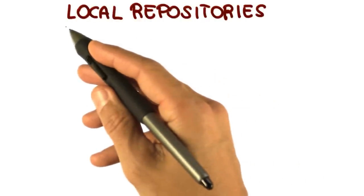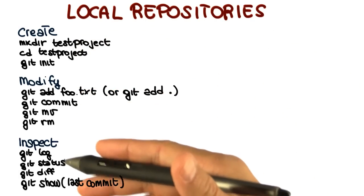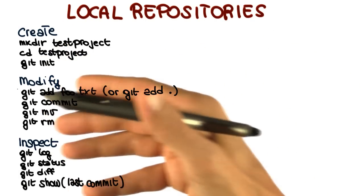So let me start by recapping some of the operations that we can perform on local repositories. I'm just going to list them here and go through them by separating them into three main categories.